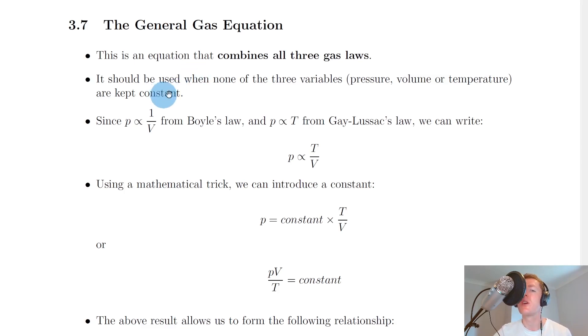So this general gas equation should be used when none of the three variables, i.e. pressure, volume, or temperature, are kept constant. And remember this is different to the three gas laws because in each of the three gas laws, one of these variables was kept constant.